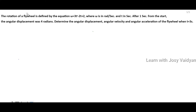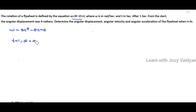So, the rotation of the flywheel is defined by omega equals 3t squared minus 2t plus 2. This is how the rotation of the flywheel is defined by time. After 1 second from the start, the angular displacement was 4 radians. So, time t equals 1 and the angular displacement is 4 radians.